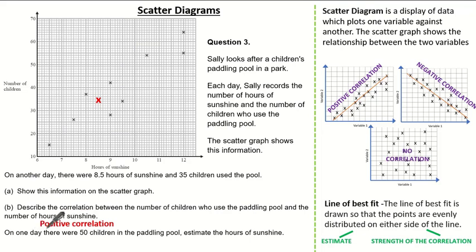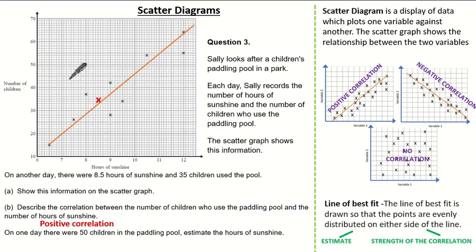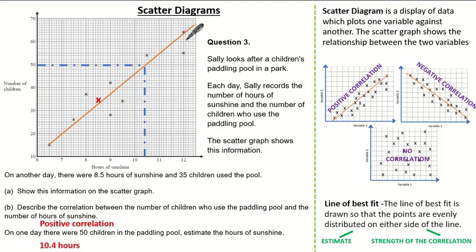It states that one day there were 50 children in the paddling pool and we're asked to estimate the hours of sunshine. Because it's an estimate, we have to use our line of best fit. Drawing our line of best fit and trying to ensure our data points are evenly distributed either side of the line, I have to identify where 50 children is on the axes, read across, and I get an estimation of 10.4 hours. In this exam question, as long as you've drawn a line of best fit and shown your working lines correctly, the examiner will accept any answer between 10 and 11 hours.